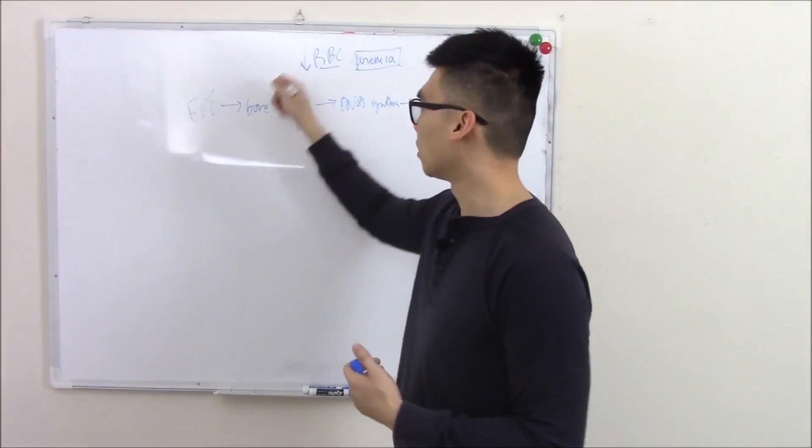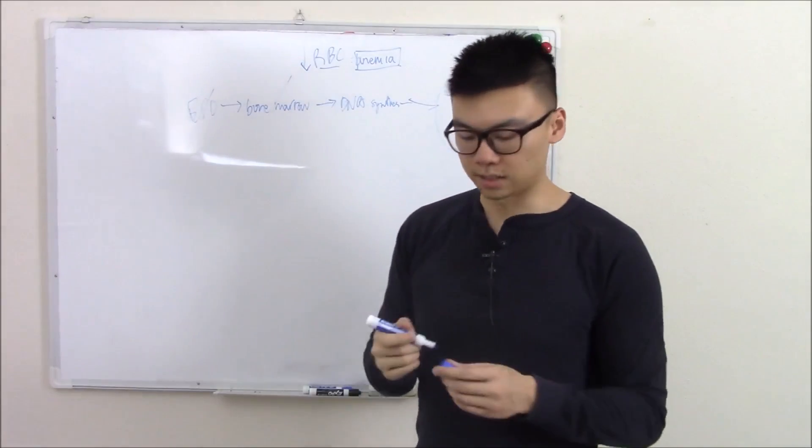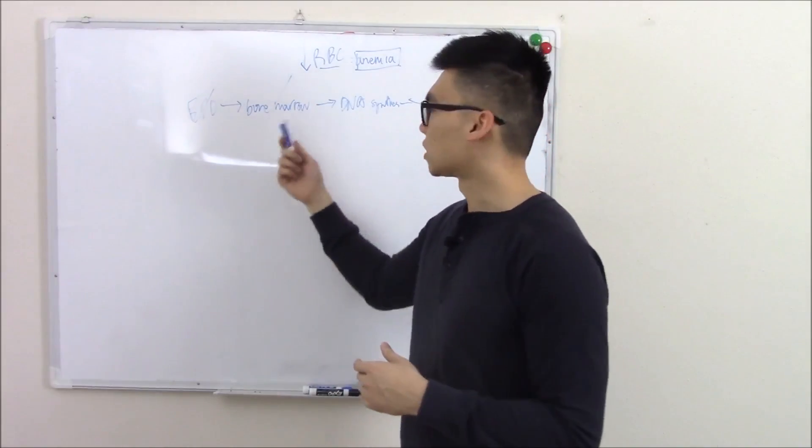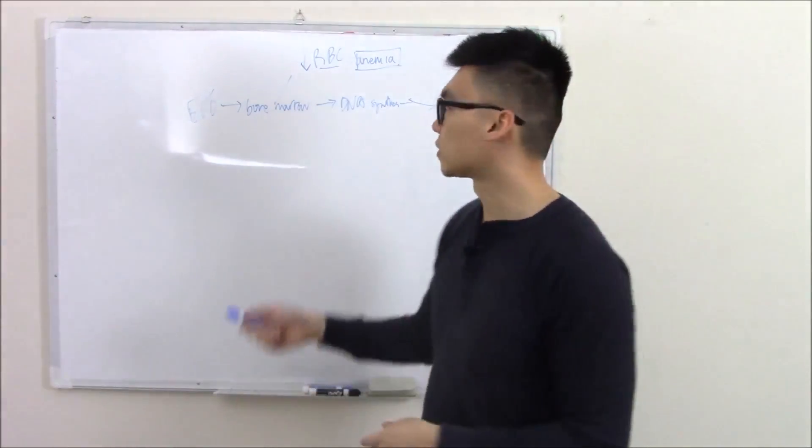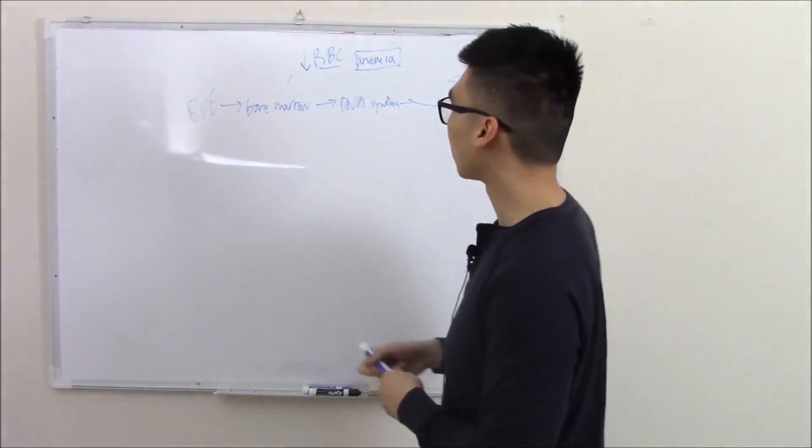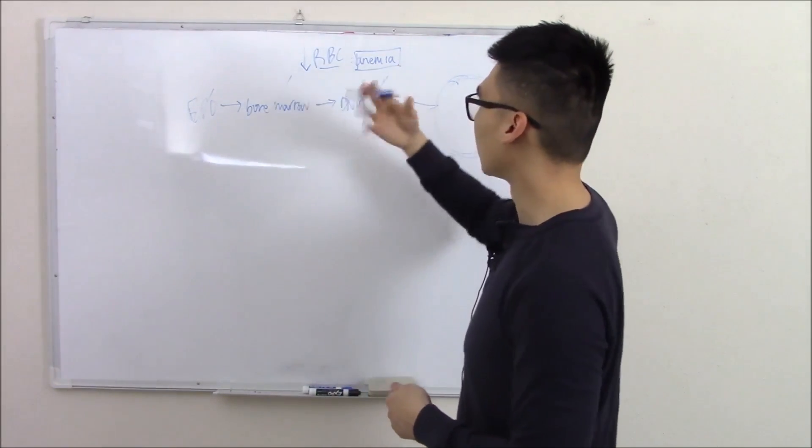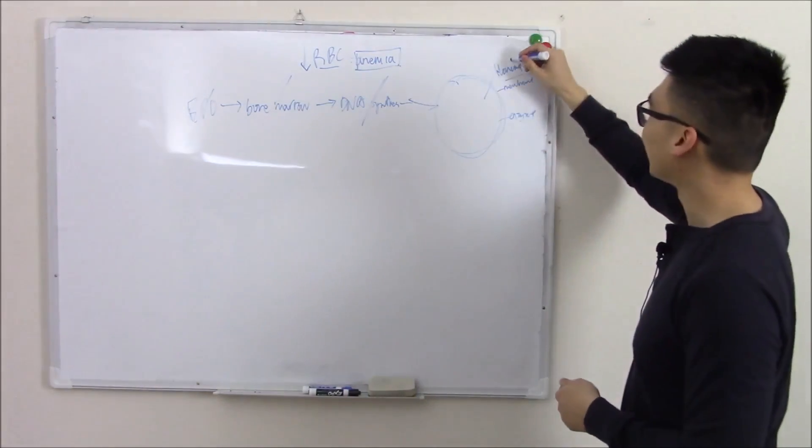Literally anything that can go wrong will go wrong. So you can have a problem with EPO. You can have a problem with your bone marrow, like aplastic anemia. We talked about some causes of pancytopenia in a previous talk. You can have a problem with DNA synthesis if you're folate or B12 deficient. You can have a problem with heme.